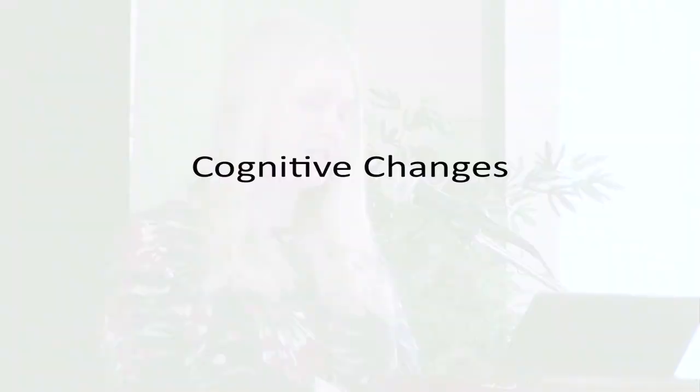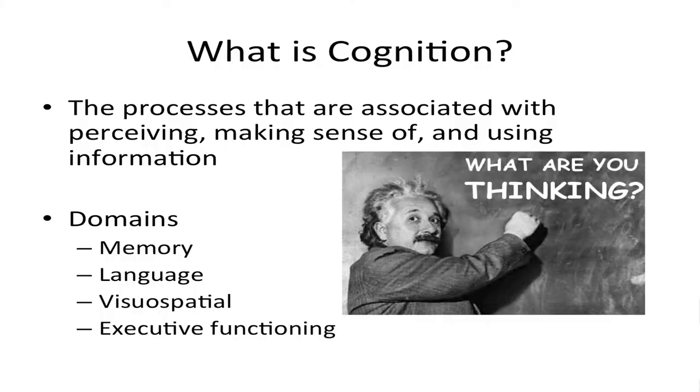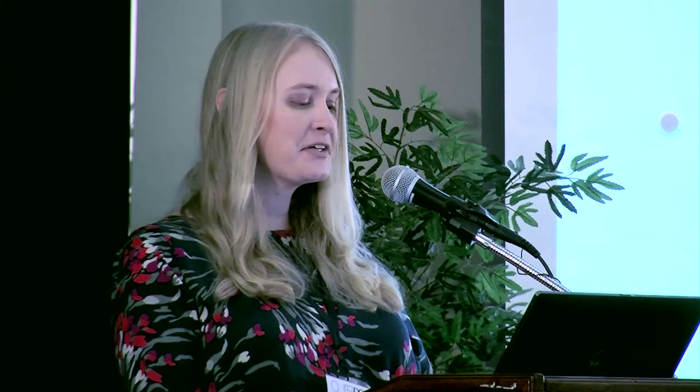We'll now move on to cognitive changes in PSP and CBD. Cognition refers to the processes associated with perceiving, making sense of, and using information — in other words, our thinking processes. There are four main domains impaired in PSP and CBD: memory, language, visuospatial, and executive functioning.